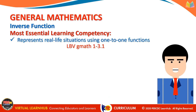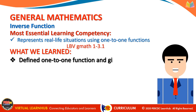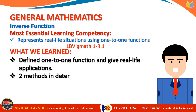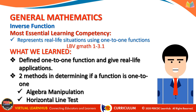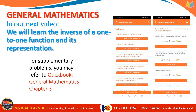And that's the end of our lecture. What we learned in this video: we defined one-to-one function and gave real-life applications. We also learned the two methods in determining if a function is one-to-one — by algebra manipulation and by horizontal line test. In our next video, we will learn the inverse of a one-to-one function and its representation. For supplementary problems, you may refer to Quexbook General Mathematics Chapter 3.